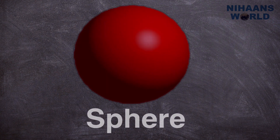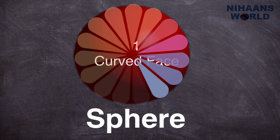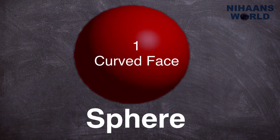Sphere. A sphere is a geometrical object in three-dimensional space that is the surface of a ball. It has one curved face, zero edges and zero vertices.